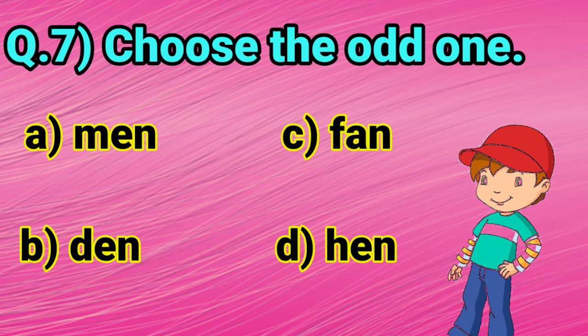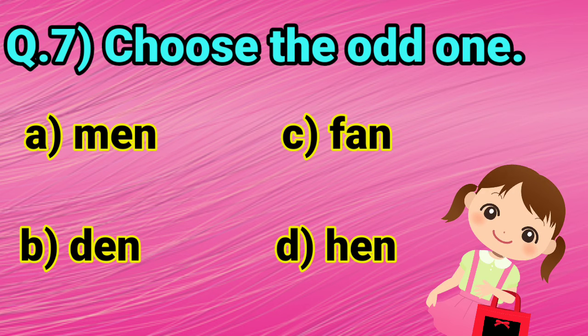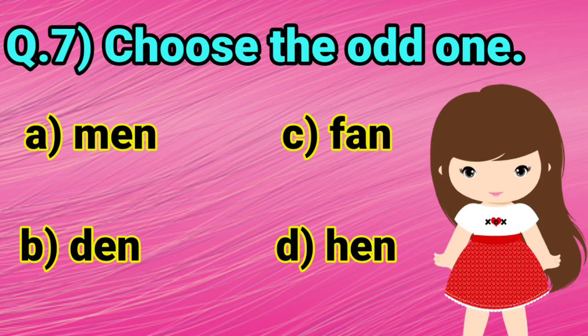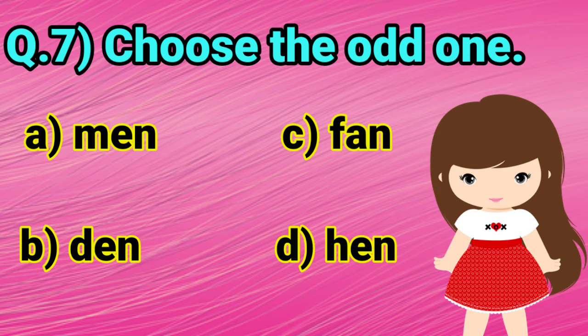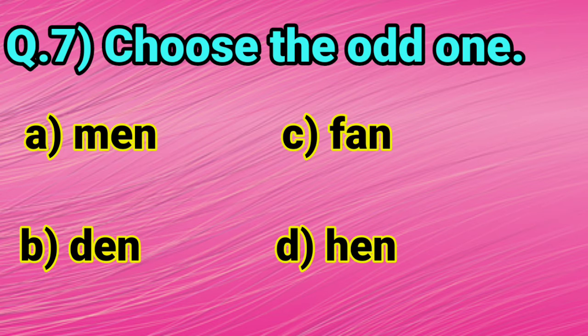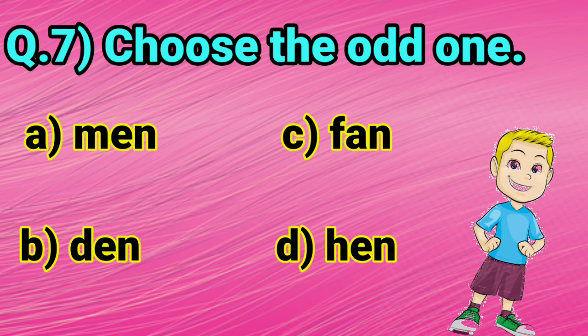Option A, men. Option B, den. Option C is fan. Yes, you are right. Now, read the option D. Option D is hen.